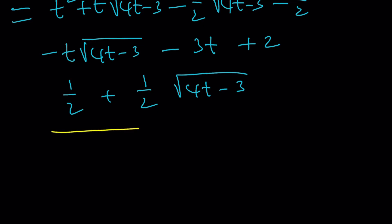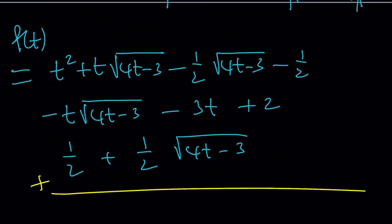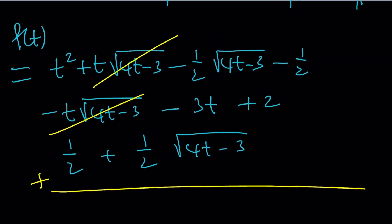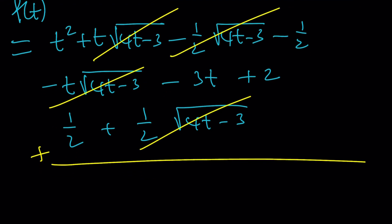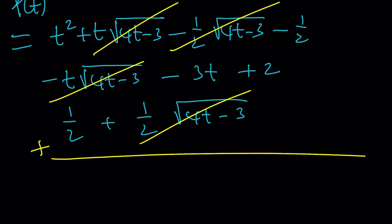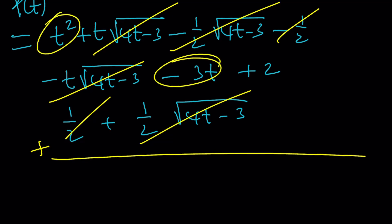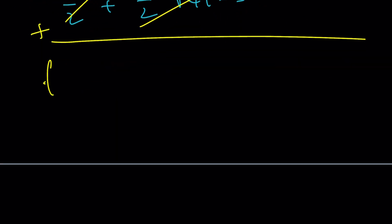Now I'm supposed to add these all up, and when I do I notice that these two cancel out. These two cancel out, right? What else? Let's see. I have a negative one half and positive one half. They do cancel out. Awesome. Beautiful. And I end up with t² - 3t + 2. Beautiful. So f(t) becomes t² - 3t + 2. Isn't that beautiful?